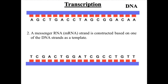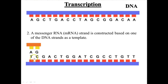Then the second thing is that we start constructing our messenger RNA based on one of the DNA strands as a template. In this example, we're using the bottom strand as our template. One at a time, the nucleotides are paired with the complementary strands on the DNA. An A mRNA nucleotide bonds with T, G bonds with C, C bonds with G — but we have one difference in mRNA. RNA doesn't have thymine; RNA has something called uracil. So U bonds with A rather than T.